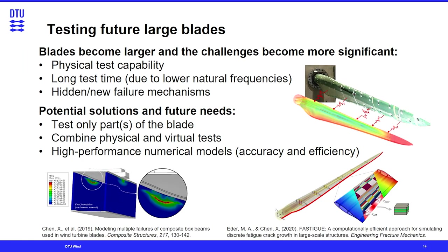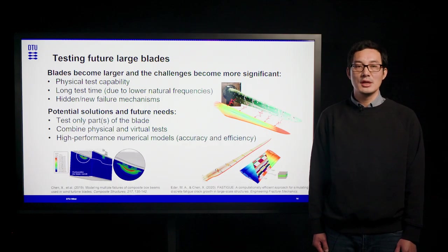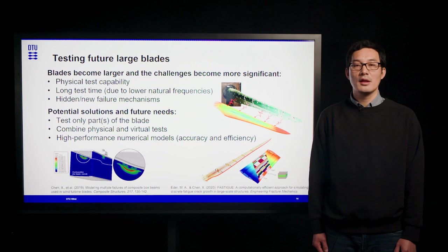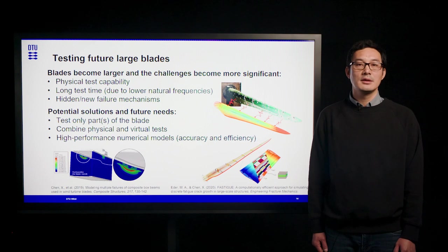Regarding testing future large blades, we know that blades are becoming larger and the challenges of testing them become more significant. This is due to the fact that physical test capability is limited. They also require long test times due to lower natural frequencies when the blade becomes larger. There might also be another challenge that a heightened or new failure mechanism can occur when the blade is scaled up to a size that we have never experienced before.